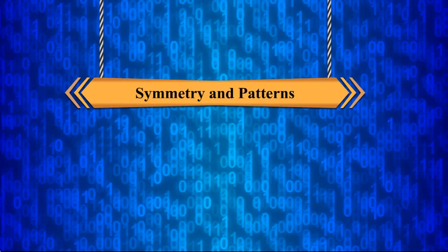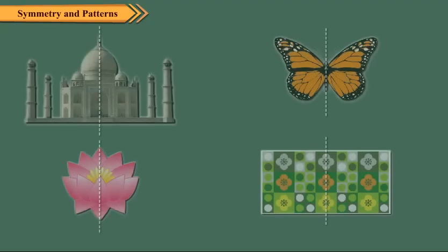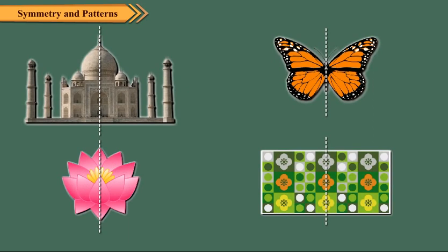Symmetry and patterns. Symmetry can be observed all around us. We can see symmetry in man-made as well as natural things. We can see symmetry in monuments, insects, flowers, leaves, designs, etc.